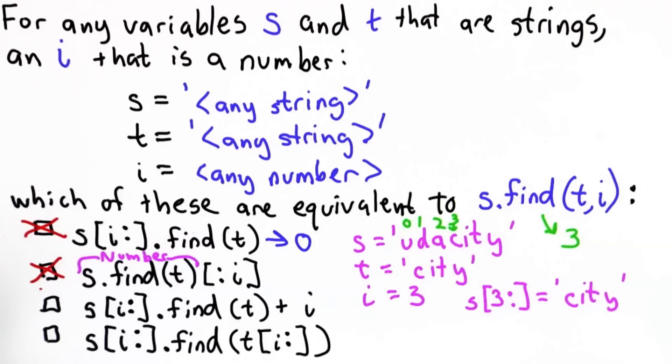The third one's the trickiest one. This is one that I originally thought would be equal. And for this particular case, it is. In this case, when we do s[3:].find(t), well, that's going to produce the result 0 that we saw before. And then when we add i to it, we're going to get the value 3. So in cases where we find the string t in s starting from position i, this will be equivalent.